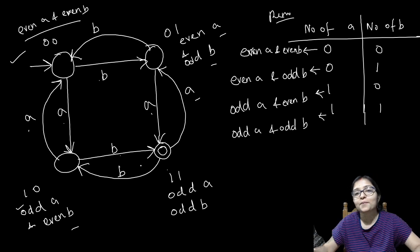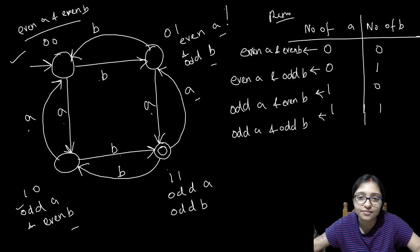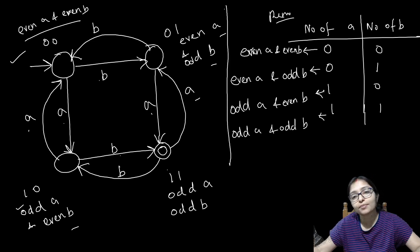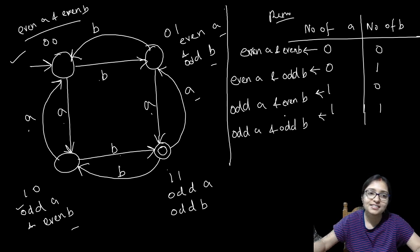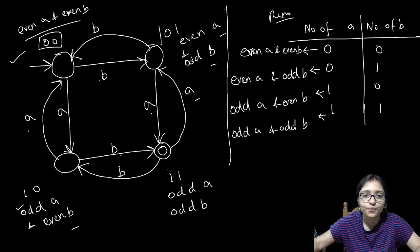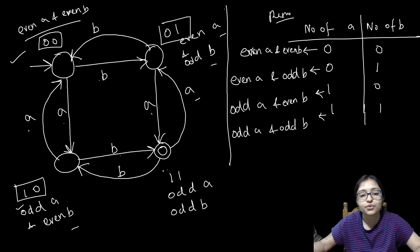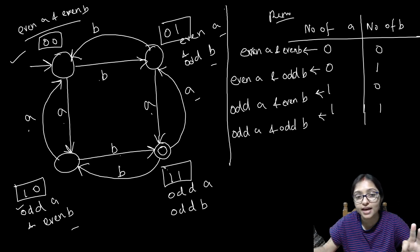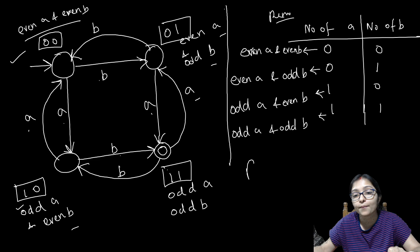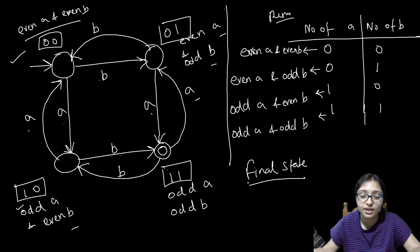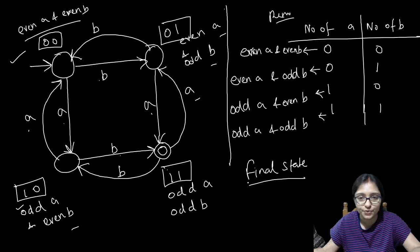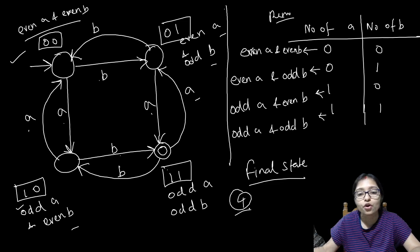I hope this is clear — how to do all of these: even number of A even number of B, even number of A odd number of B, odd number of A even number of B, odd number of A odd number of B. Just remember this one diagram: 0,0 — 0,1 — 1,0 — 1,1. With the same diagram, only by changing the final state you can do the answer. If they are asking what is the minimum number of states, the answer is 4 for all the questions.